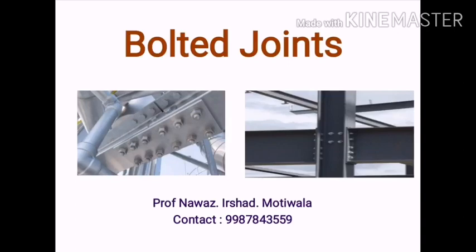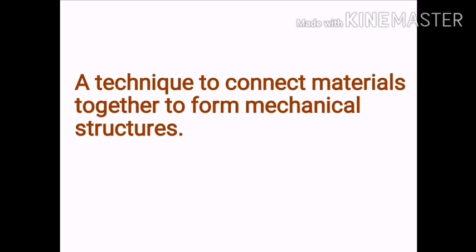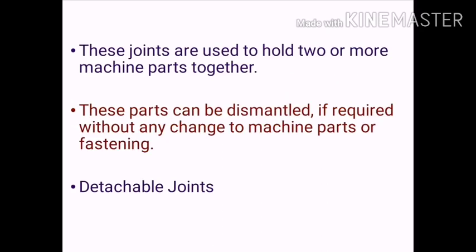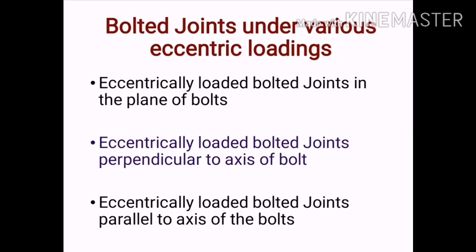Welcome students. In today's lecture we will learn about design of bolted joints. Bolted joints is one of the techniques used to connect material together to form mechanical structures. These joints are used to hold two or more machine parts together. This part can be dismantled if required without any damage to the machine parts or fastening.